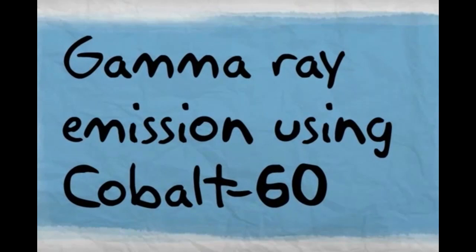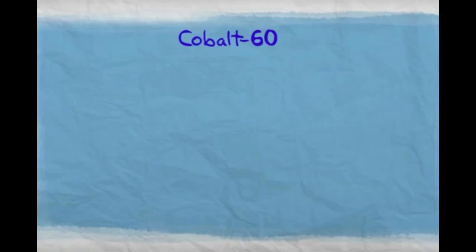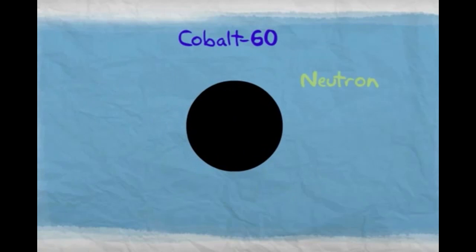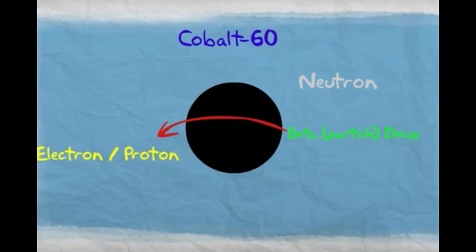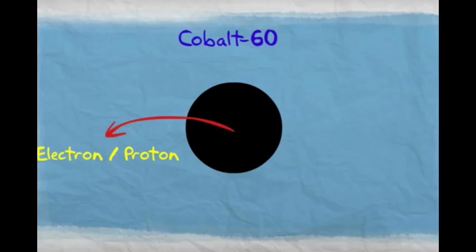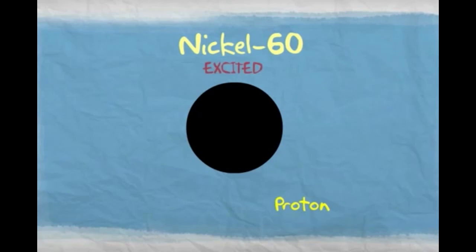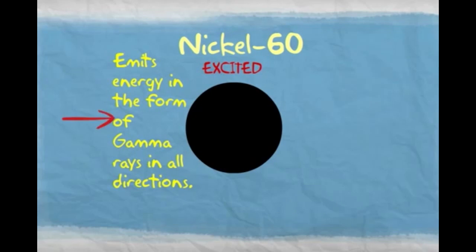The gamma knife uses cobalt-60 as its source of gamma radiation, which is a synthetic radioactive isotope of cobalt. Cobalt-60 decays by beta decay into nickel-60. As nickel-60's energy deteriorates, it emits gamma radiation.